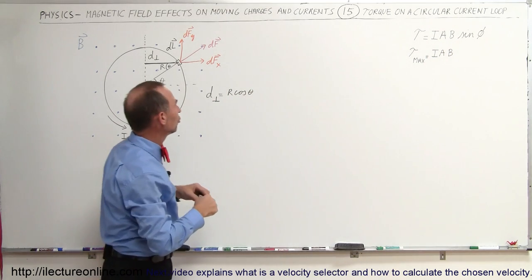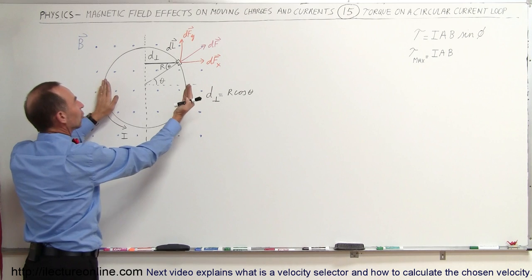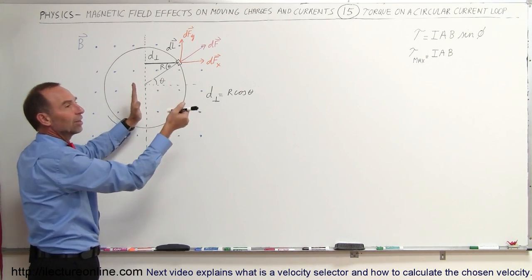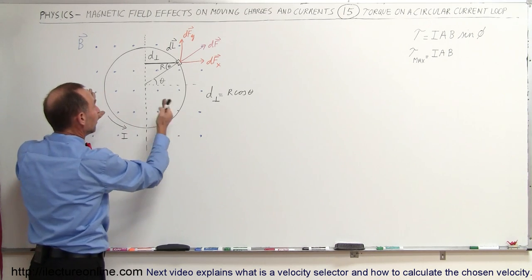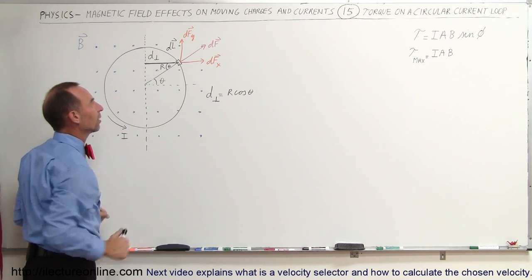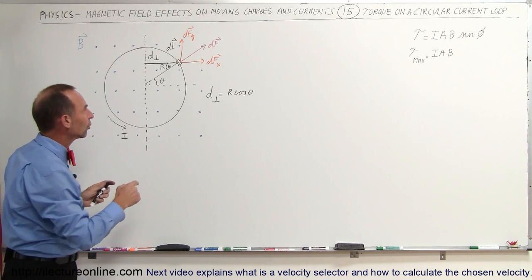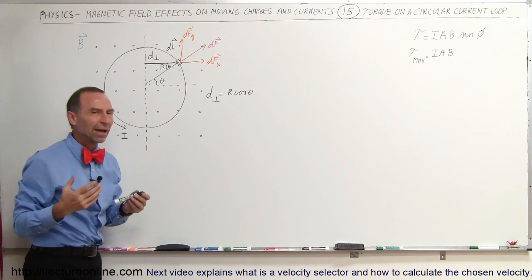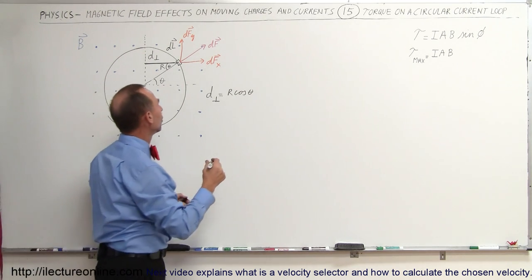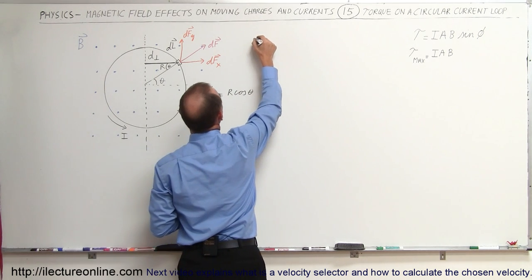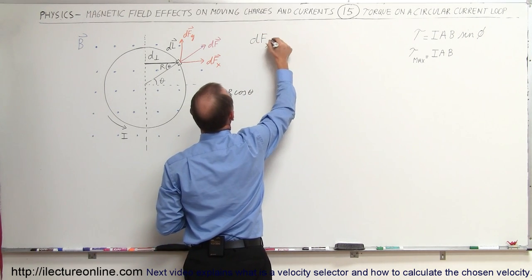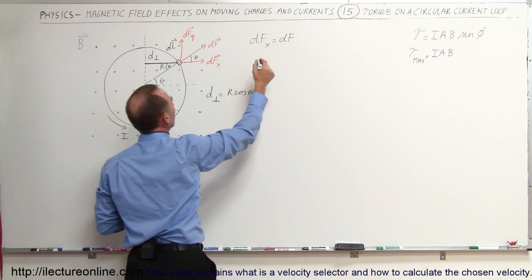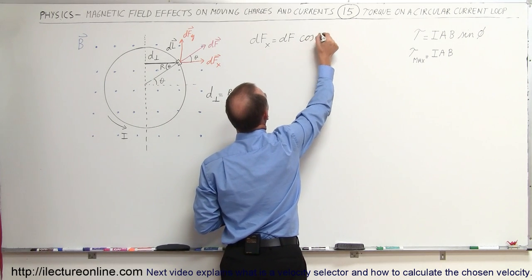So what we're going to do for a moment is assume that this loop is turned 90 degrees like this, and of course the force would be in this direction, giving you the maximum torque — but it's easier to see the drawing when it's drawn like this. So what we're going to do now is add up all the dFs all the way around the loop in the x-direction. So we have to define the force in the x-direction, and we can say that dF in the x-direction is equal to dF times the cosine of the angle theta.